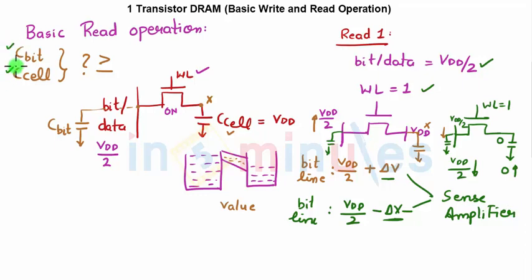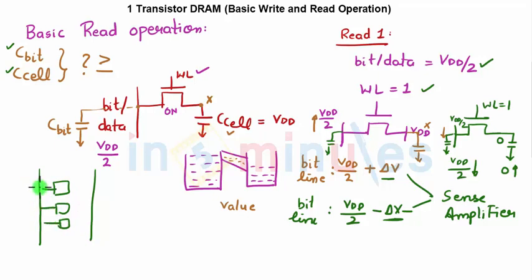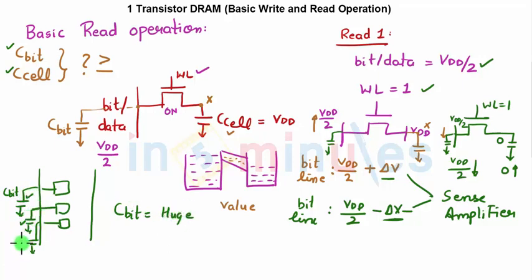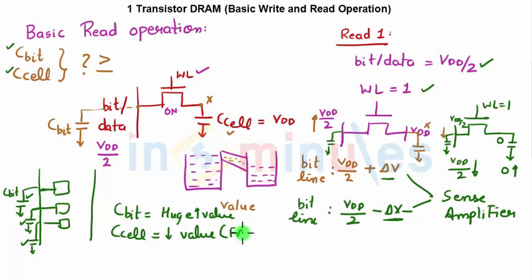Regarding C_bit versus C_cell: technically, a one-transistor DRAM is never alone — it is always in an array. Multiple cells share one column, so all their bit-line capacitances are connected in parallel and add up, making C_bit a huge value. Meanwhile C_cell has to be a small value because we want less area for our DRAM. However, if C_cell is too small, the delta V voltage swing will not occur. We will see the delta V voltage swing calculation and how the read mechanism also ensures the refresh and data rewrite in the next clip.